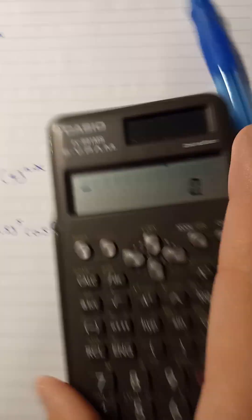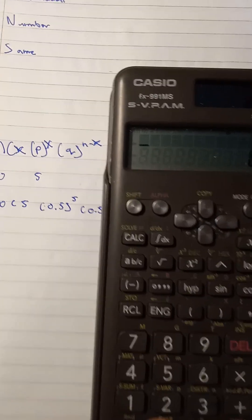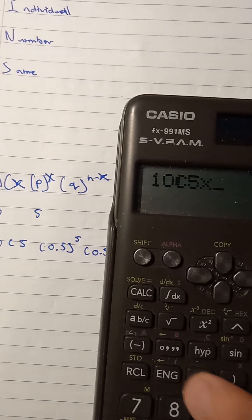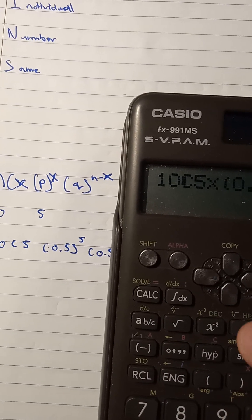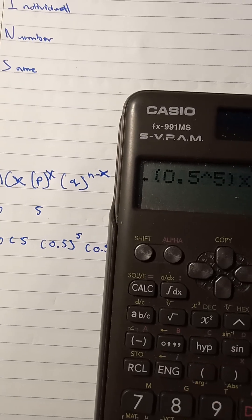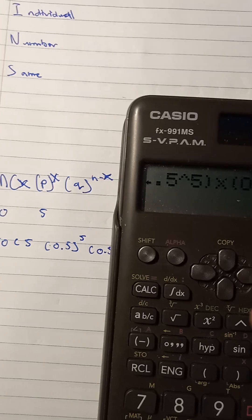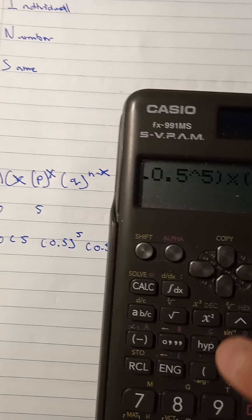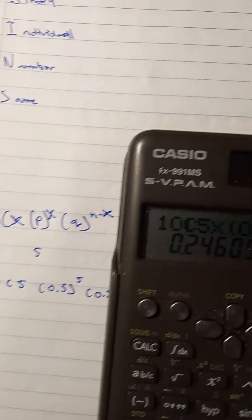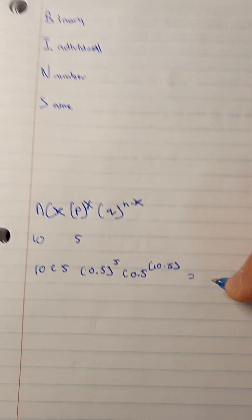So using this calculator, we can see 10 choose 5 times 0.5 to the 5th times 0.5 to the 5th is equal to 0.246. What does this mean?